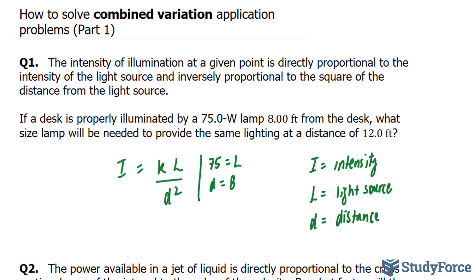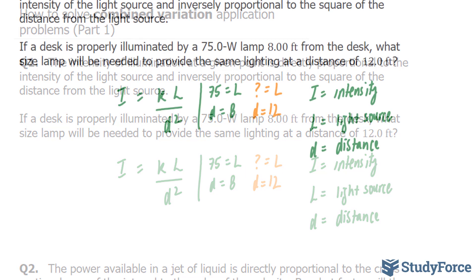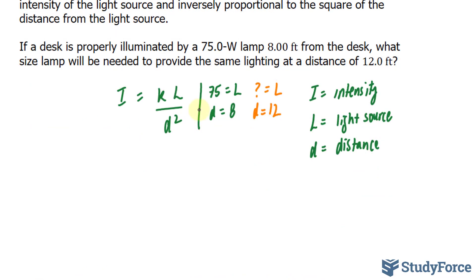So in our second scenario, we're changing D to 12, but we don't know L and I is remaining consistent in both situations. Here's what to do next: I'll set up two equations. One equation that represents the before conditions and the second equation will represent distance at 12.